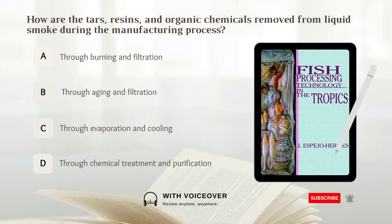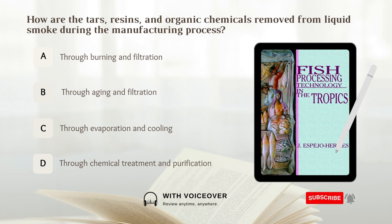How are the tars, resins, and organic chemicals removed from liquid smoke during the manufacturing process? A. Through burning and filtration. B. Through aging and filtration.